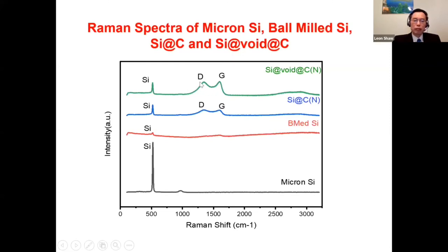However, the silicon-to-D-band/G-band peak ratio has increased after etching, indicating that some of the silicon has been etched away — which is our intended purpose.